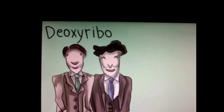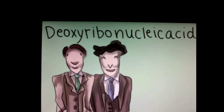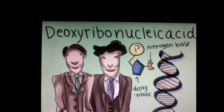You see, it all started in the 1950s, when Watson and Crick were the first to present their double-stranded helix model of DNA, deoxyribonucleic acid. DNA is made up of nucleotides, each consisting of a phosphate, a deoxyribose, and a nitrogen base.